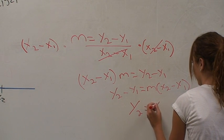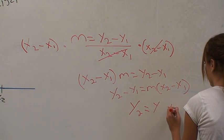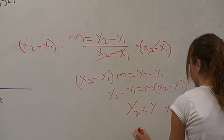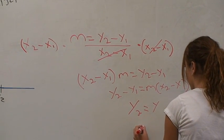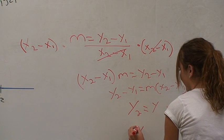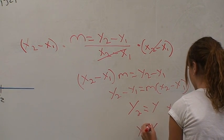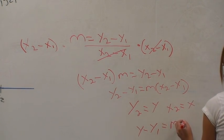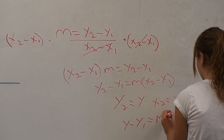y2 equals y and x2 equals x. Make these final substitutions to have the point slope form of an equation: y minus y1 equals m times the quantity x minus x1.